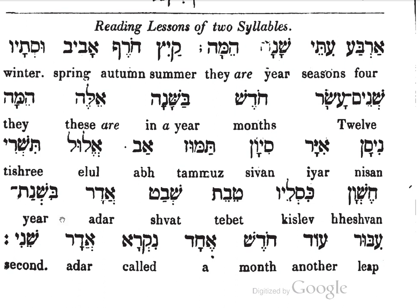Bishnat Nibur — in a leap year. In a leap year, Adar is followed by an additional month: Ngood Khodes Ehad — a further or another month, a single one. We can translate it as 'a,' which of course is the old English word for one. So Ngood Khodes Ehad nikra — is called — Adar Sheni, second Adar.